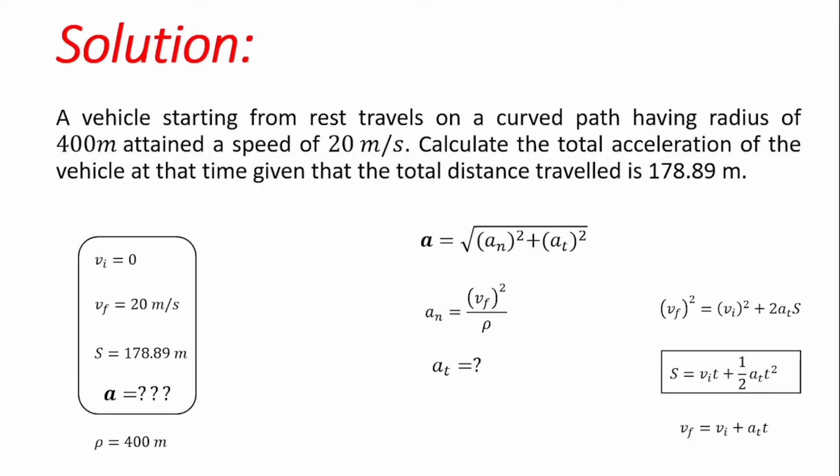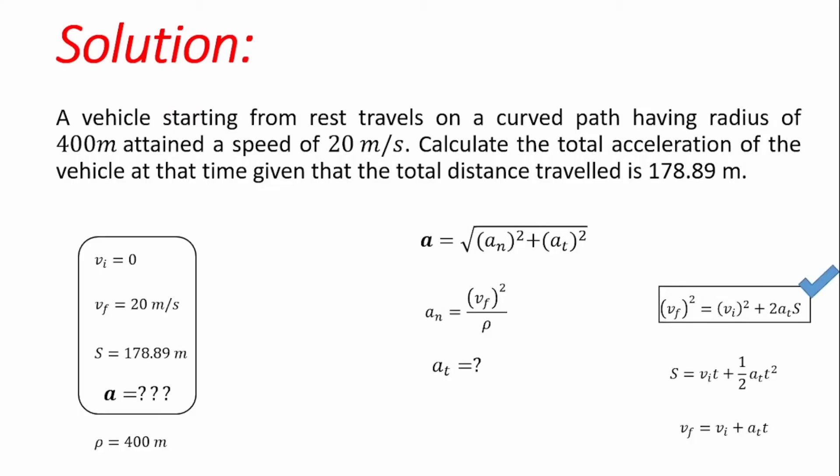The second equation also contains time and acceleration as two unknowns, so it is also not valid for our use. Looking at the third equation, the only unknown is acceleration — we have final velocity, initial velocity, and distance, all of which are given. This makes the third equation the valid one for determining the tangential component of acceleration. We now have two key equations to find the two unknowns needed to calculate total acceleration.